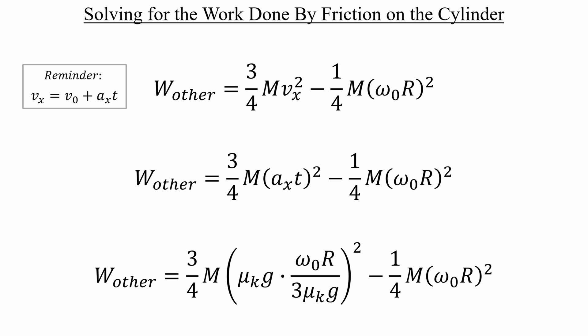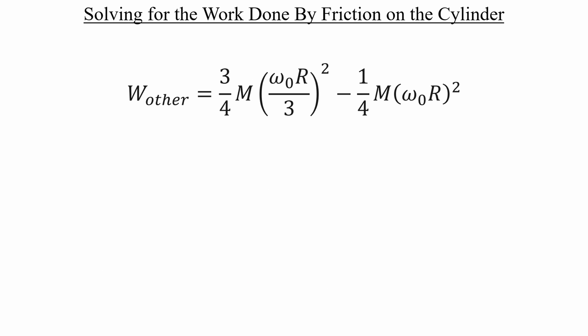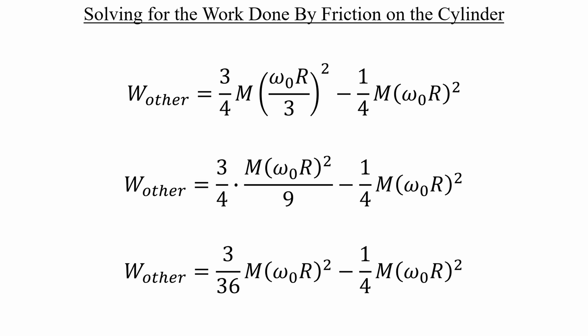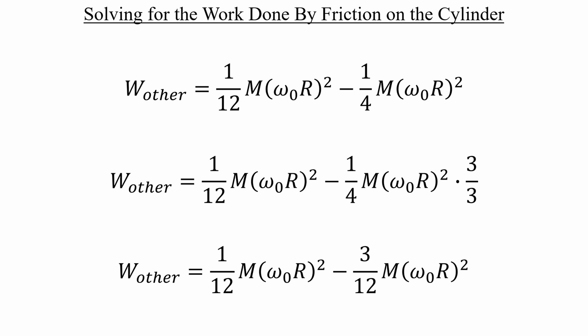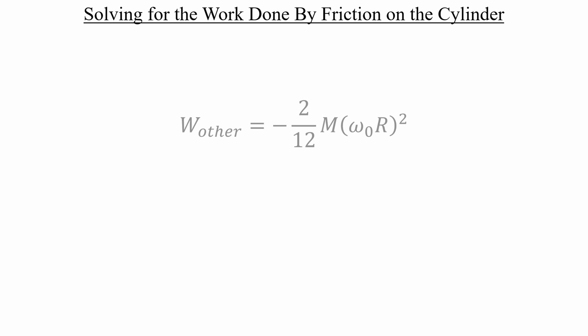Let's go ahead and substitute our previous expressions for the linear acceleration and the time. I'm also going to cancel out that mu sub k times g before squaring. Once we clean things up and take care of that, there's some simplification needed in the first term. We have another situation where these two terms can be added together, but we need a common denominator first. Let's multiply the second term by a special factor of 1, which will result in the following. 1 over 12 minus 3 over 12 is equal to negative 2 over 12, which we can simplify one last time to negative 1 over 6.